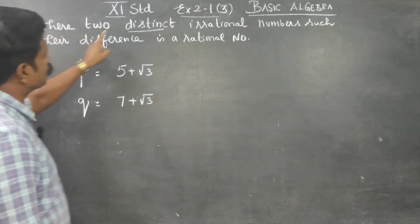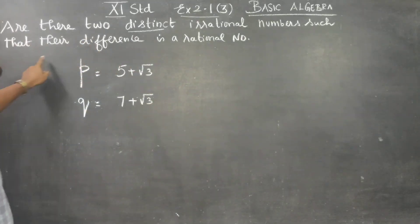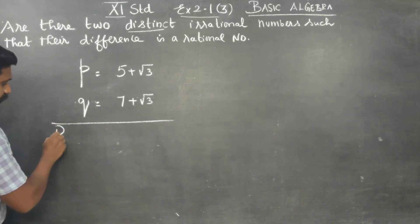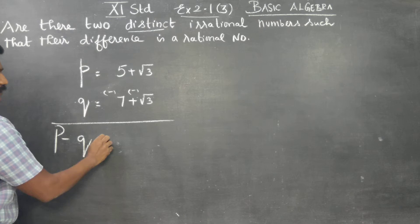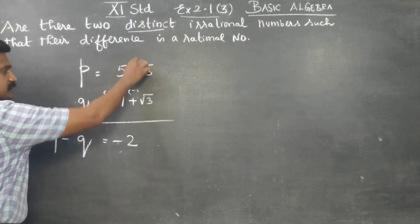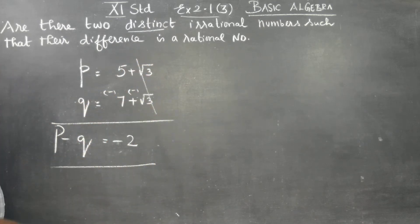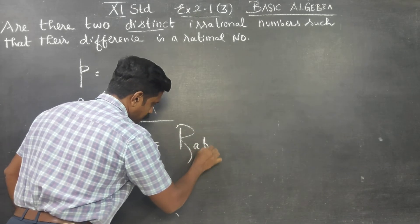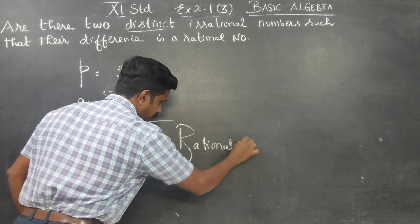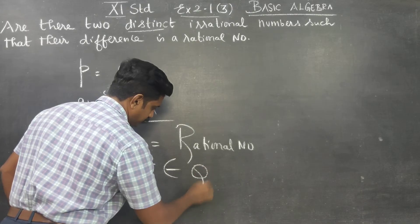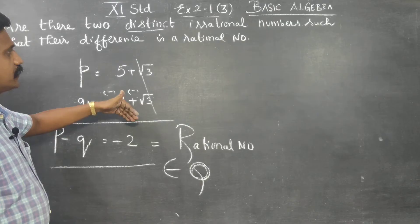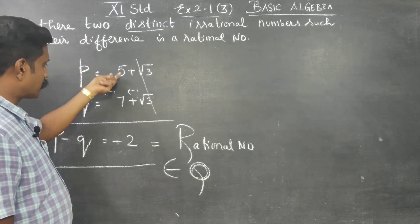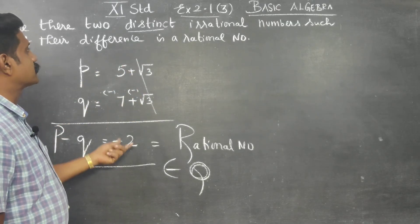Are there two distinct irrational numbers such that their difference is a rational number? The difference is a rational number, it belongs to Q. If the difference is rational, 5 minus 7 is minus 2, it belongs to Q.